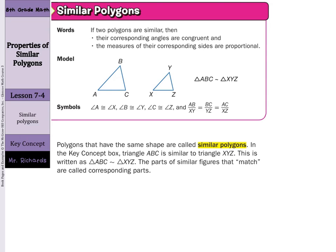And then our ratios here, AB over XY equals BC over YZ equals AC over XZ. Polygons that have the same shape are called similar polygons. Triangle ABC is similar to triangle XYZ, written with the little squiggly symbol. The parts of similar figures that match are called corresponding parts.